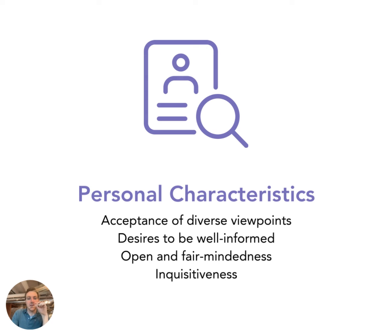And personal characteristics: acceptance of diverse viewpoints — going back to that need for diversity and different viewpoints when dealing with complex systems. We could also say being inclusive is an important aspect of that. The spaces that they create are inclusive, because they recognize the need for diversity of viewpoints and opinions. So a desire to be well informed, open, and fair-minded — these are foundational critical thinking skills that are truly needed for being a systems thinker. They're also inquisitive and curious — curiosity is a really important attribute in the world of complexity, because it's going to help you continuously inquire, search, learn, and experiment in the way that's needed when dealing with complexity.